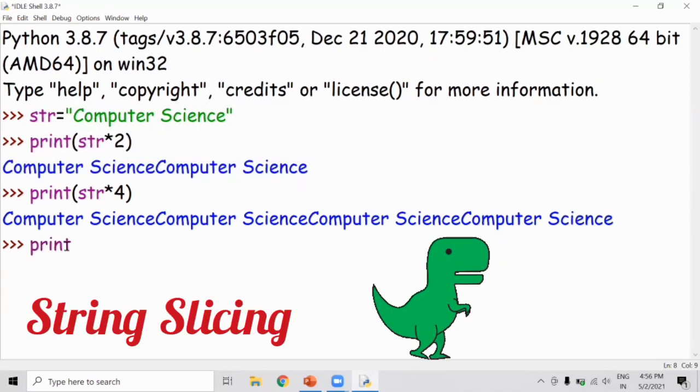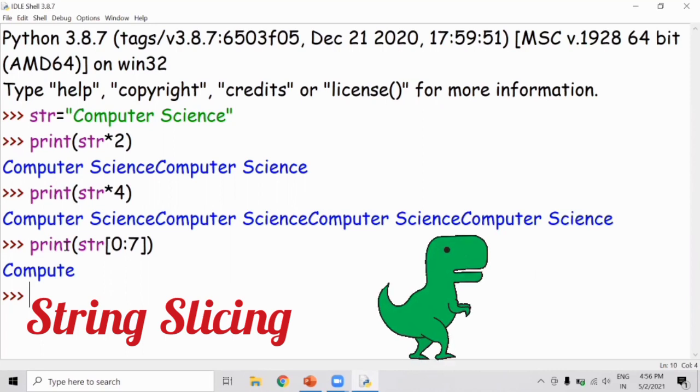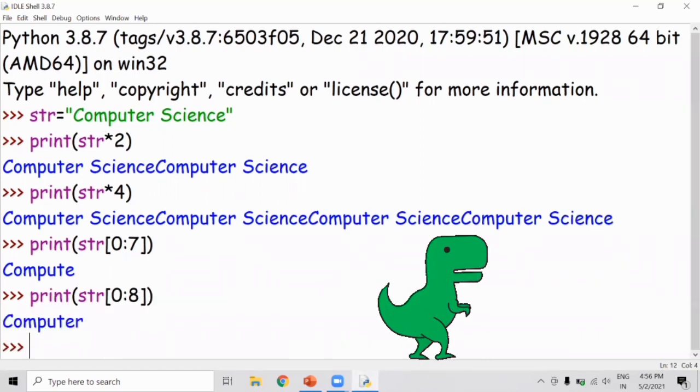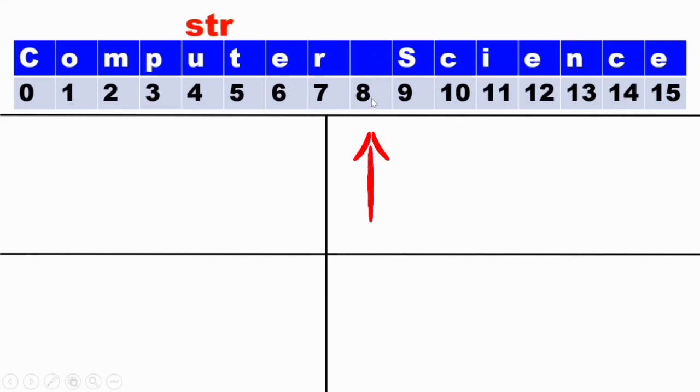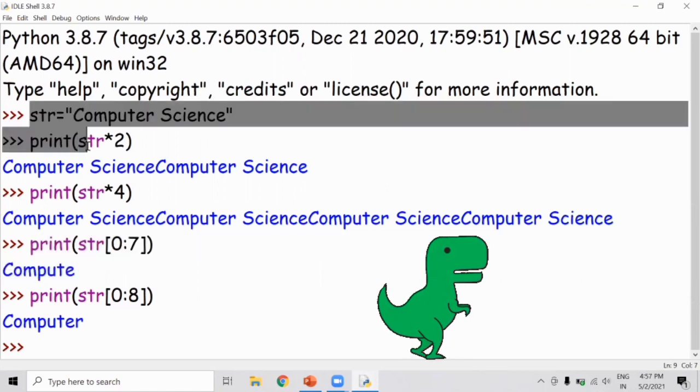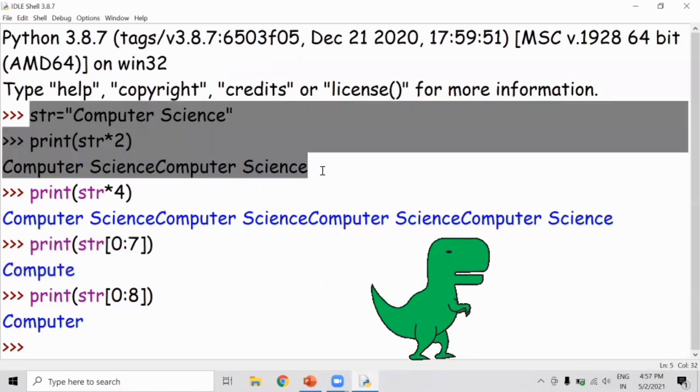Next, print STR with starting index 0, colon, ending index 7. So compute will print out. Compute will print out. This concept is based on string slicing.